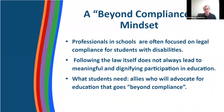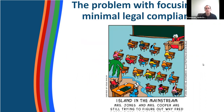But following the law itself does not always lead to meaningful and dignifying participation in education for students with disabilities. Looking at this image, we could say the student with a disability is actually getting what is legally required — he is in the general education classroom, the least restrictive environment, with his peers with and without disabilities, and he is receiving support from a paraeducator. So this might be legally compliant, but is the student having access to an education that provides really meaningful academic and social benefits with his non-disabled peers?